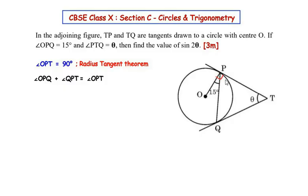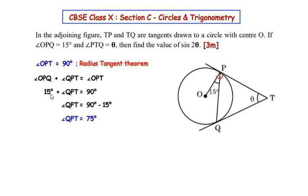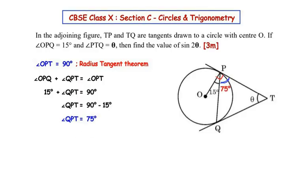We can see that this total angle OPT is made up of two angles: angle OPQ plus angle QPT. Substituting the given value, angle OPQ becomes 15 degrees, so 15 plus angle QPT equals 90 degrees. Taking 15 to the other side, we get angle QPT equal to 90 minus 15, which gives us angle QPT as 75 degrees.